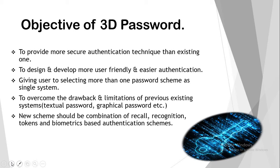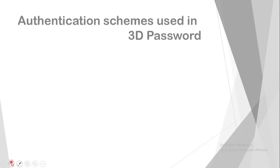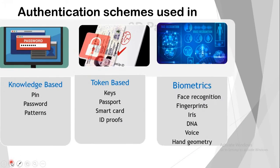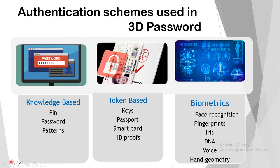Now we will see what those authentication systems are. These are the authentication schemes used in 3D Passport. Knowledge-based: records, keys, passwords, and patterns. Token-based: keys, passwords, smart cards, ID processors, and token sales authentication schemes. Biometrics authentication includes fingerprints, iris, DNA, voice, and hand geometrics.